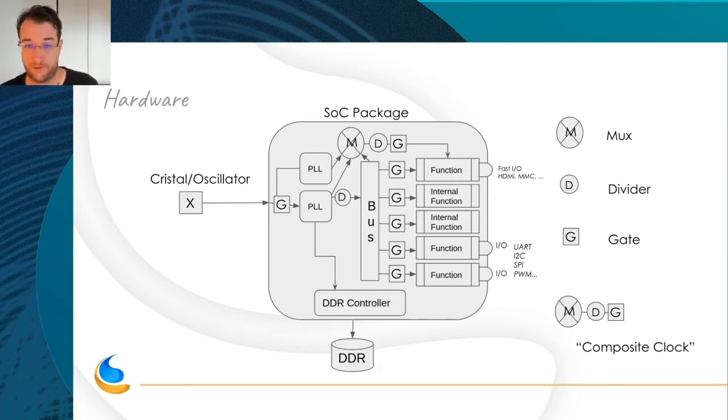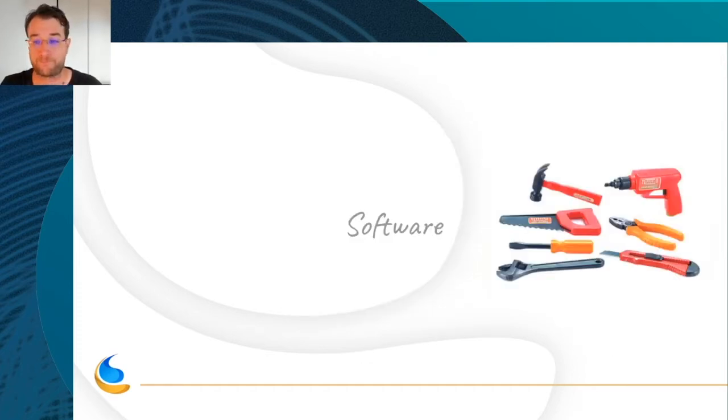In the Linux world, we used to call the group MUX, divider, and gate as a composite clock. Because in the systems, you see a lot of these groups of clocks before functions. So, let's see in software how it was implemented.